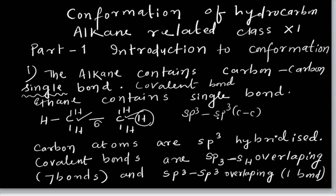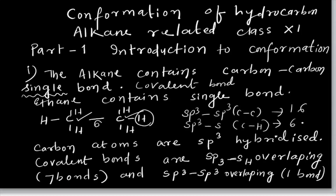The C-C bond gives 1 sigma bond, and the C-H bonds give 6 sigma bonds. So there are 6 sigma bonds from C-H and 1 sigma bond from C-C in ethane.